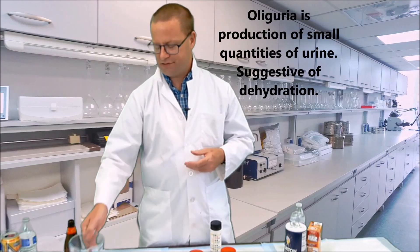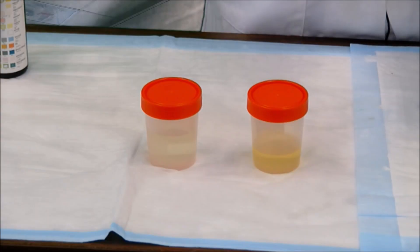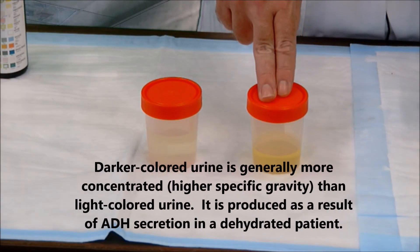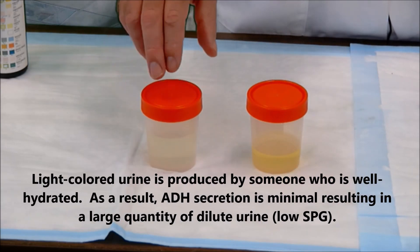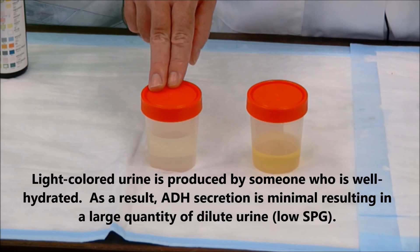You'll also notice differences in the color as well. This sample that I'm touching now is very, very dark yellow, and that indicates a very concentrated urine sample, which should have a higher specific gravity. On the other hand, this urine sample here is very light in color, indicating that the person it came from was rather well hydrated, and they have a very, very dilute urine.